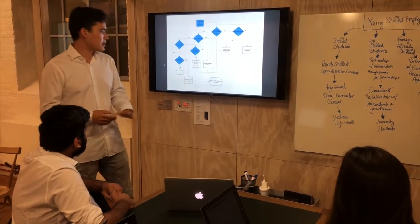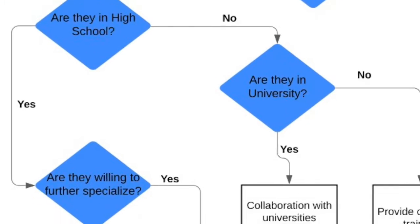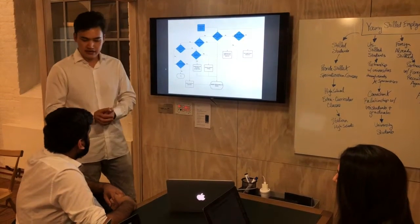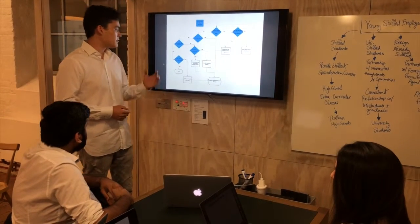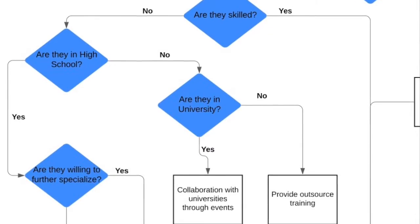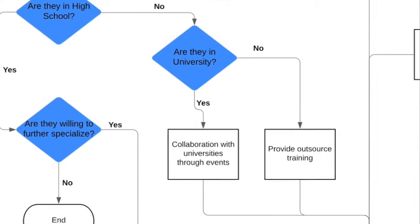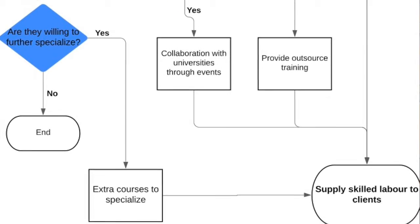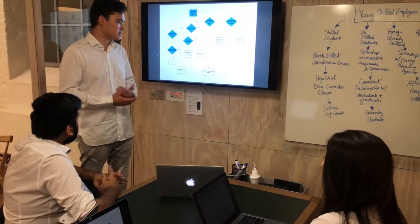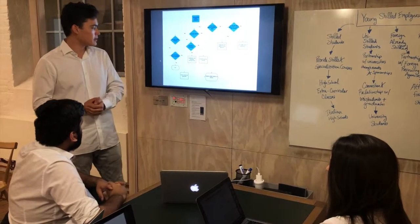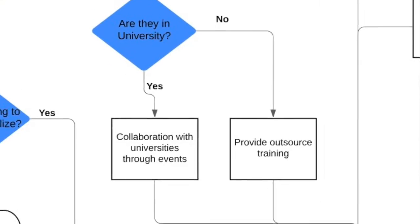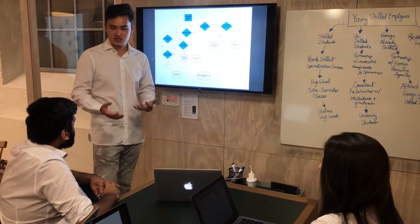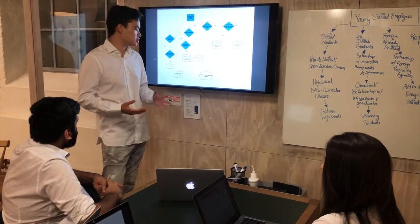If the young labor is in high school, we ask whether they are willing and interested in further specialization. If they're not interested, we reach a dead end. But if they are interested in specializing, we can give them extra courses during their high school diploma to develop skilled labor and then supply them to our clients. For university students, we can do collaborations through events where they can learn about jobs they could potentially be interested in.